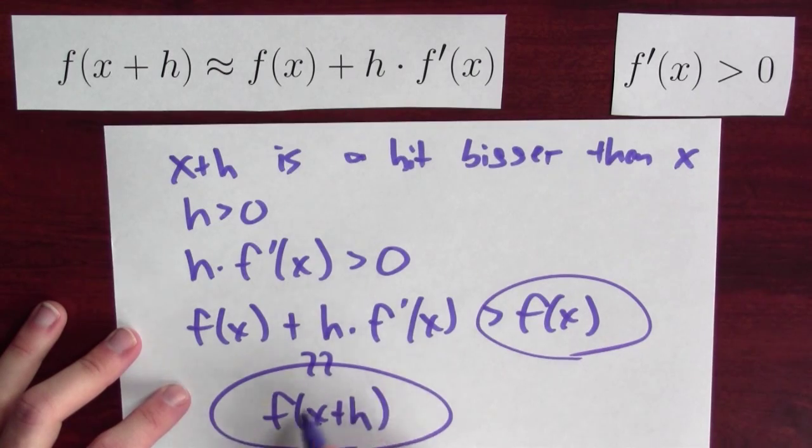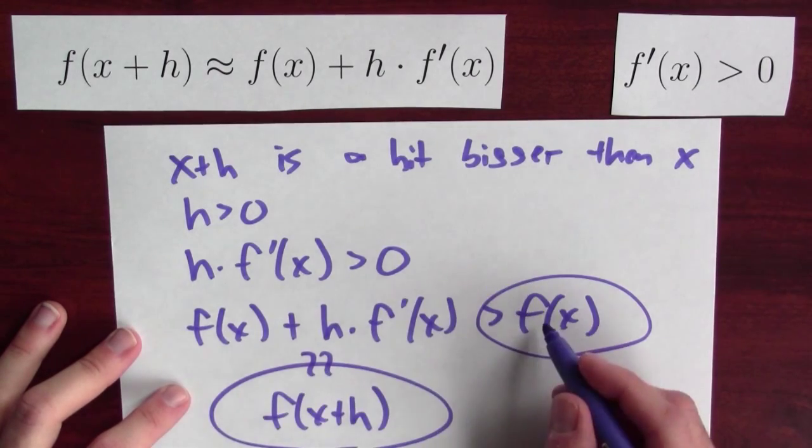So, if you plug in bigger inputs, you get bigger outputs. What about when the derivative is negative?